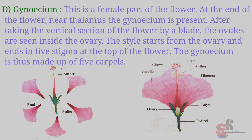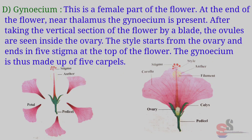Gynoecium — This is the female part of the flower. At the end of the flower, near the thalamus, the gynoecium is present. After taking the vertical section of the flower by a blade, the ovules are seen inside the ovary. The style starts from the ovary and ends in five stigmas at the top of the flower. The gynoecium is thus made up of five carpels.